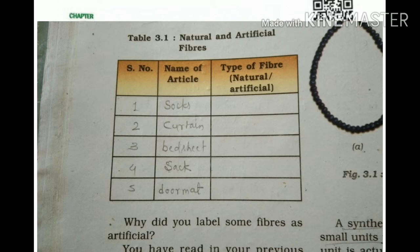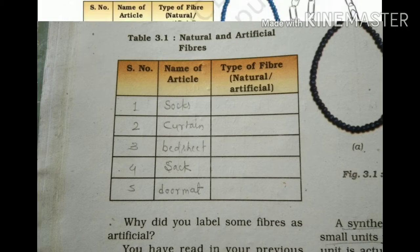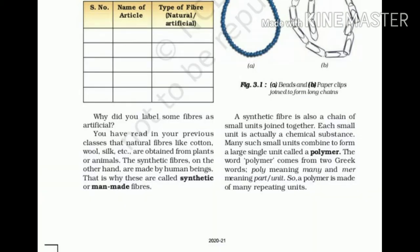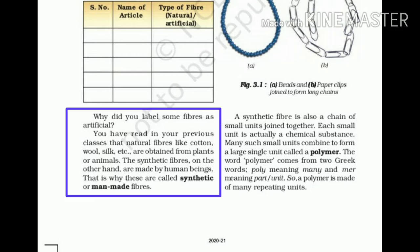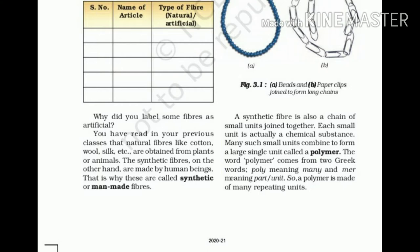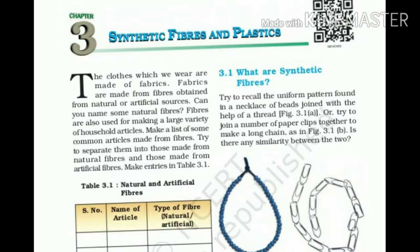We have to write whether the fiber used to make that article is natural or artificial. The fibers which we get from plants or animals are called natural fibers. The fibers which human beings have made are called synthetic fibers or man-made fibers. After reading this chapter, we will fill Table 3.1.